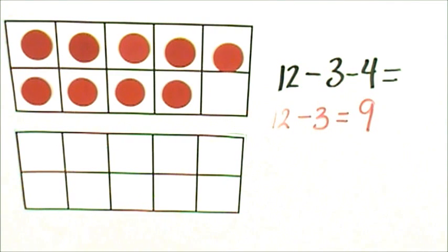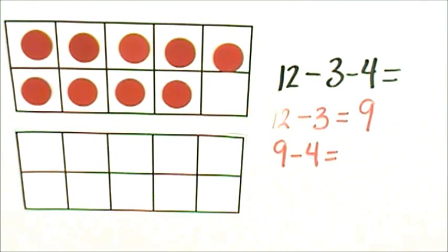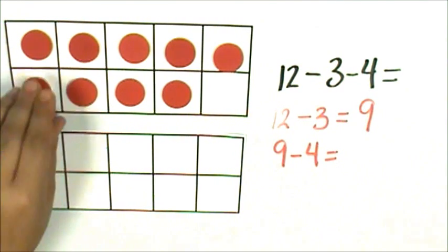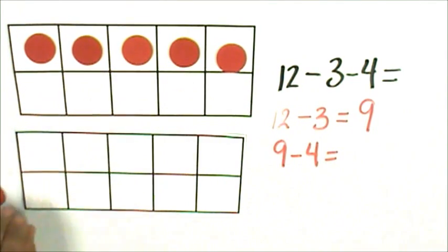Now I need to continue and subtract 4. So now it's 9 minus 4. And when I look at my 10 frame, if I take 4 away, I have 5 left.